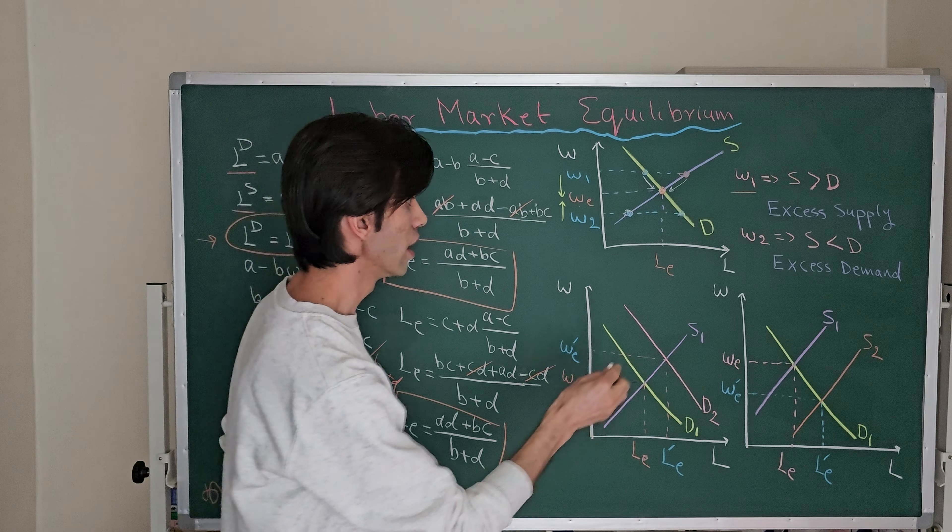As employers move along the demand curve offering higher wages, workers who see the opportunity for higher pay begin entering the labor market. This continues until labor demand and labor supply meet again at a wage rate and quantity of labor where there is no more shortage or surplus, restoring equilibrium.